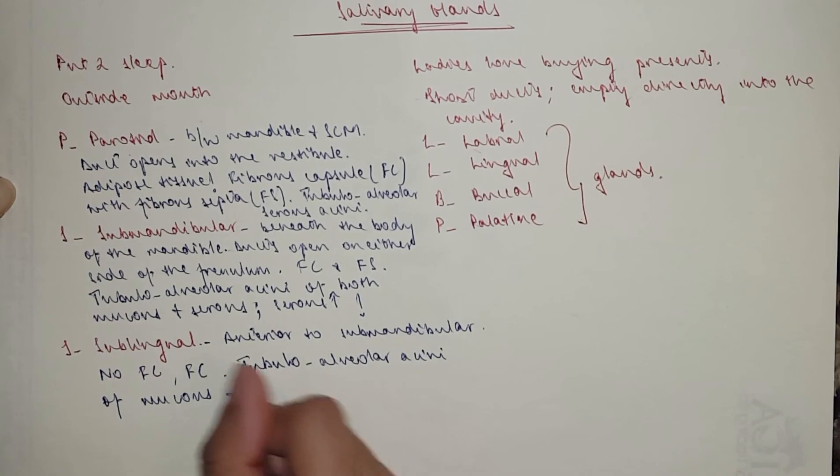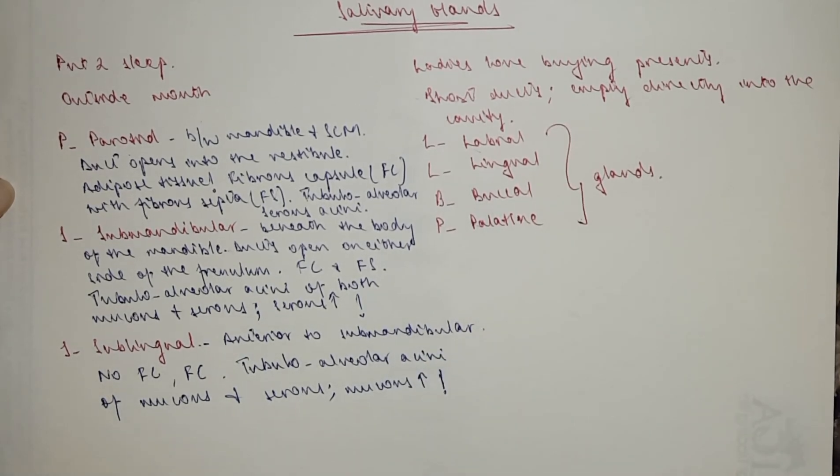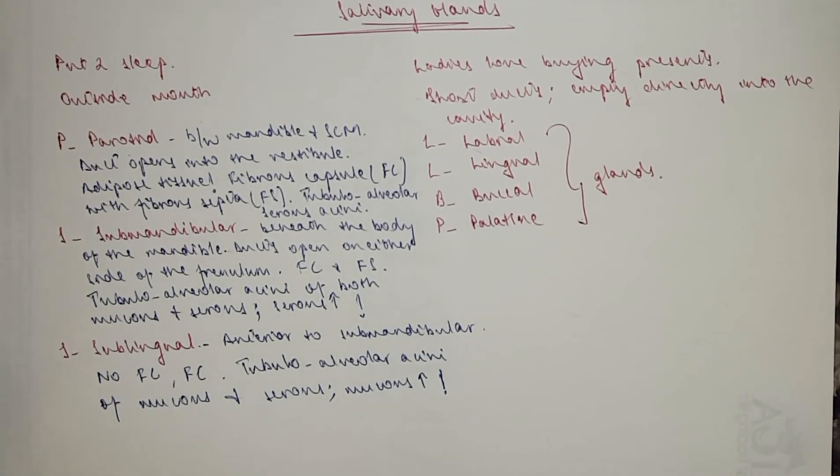Again, just like the submandibular, of both mucous and serous. But if this one's predominantly serous, then this one would be mucous. So mucous with an arrow and exclamation mark.